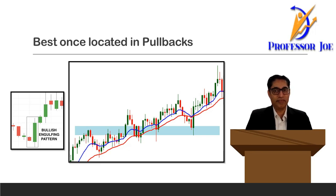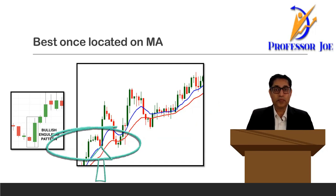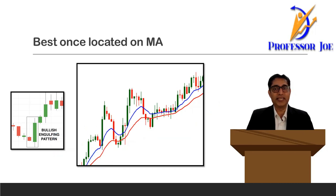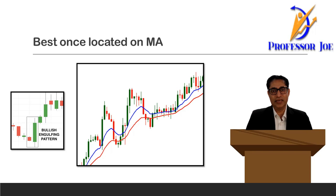The second area to identify a bullish engulfing candlestick is a moving average. As you can see on this chart, on the 10 EMA the price retraced back and there a bullish engulfing candlestick pattern has been created. So you can identify a bullish engulfing candlestick pattern one at a support zone and second on an EMA. When you are doing intraday or short-term trading, it should be a 10 EMA or a 20 EMA — not the 200 EMA or bigger EMAs. Look for shorter EMAs so the price quickly moves in your direction.